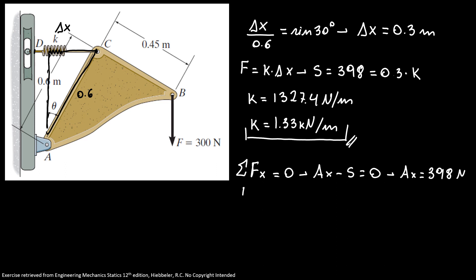And from the sum of forces in y equals zero, I have Ay minus F equals zero. So my Ay equals 300 newtons. So my vectors are Ax pointing to the right and Ay pointing up.